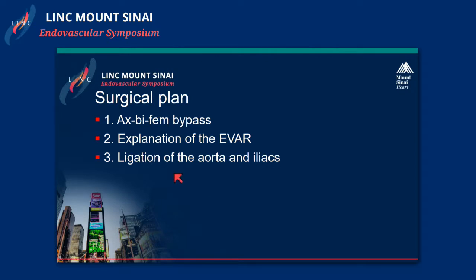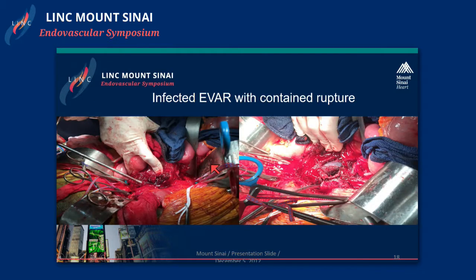For my patient, he had persistent pain on IV antibiotics. The surgical plan was to proceed with an axillo-bifemoral bypass. We explanted the EVAR and subsequently ligated the aorta and the iliacs. What's interesting is once we began the exposure — similar to what we saw on the CAT scan with discontinuity of the aorta — this was actually aortic thrombus and essentially a contained rupture. Once we removed the thrombus, you can see the endograft in place, and it was actually hemostatic.